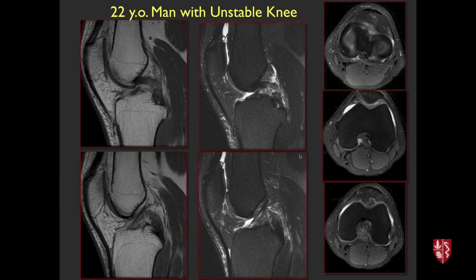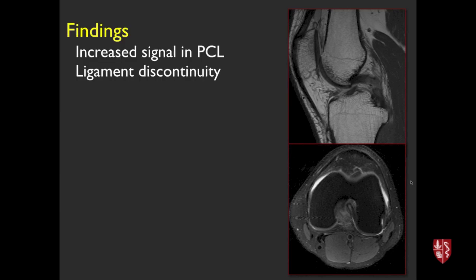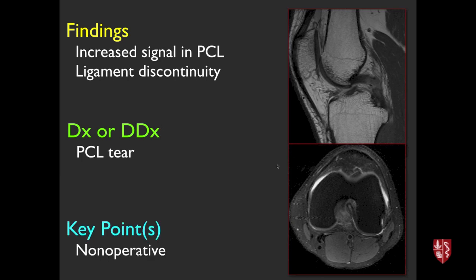22-year-old with unstable knee. MRI shows increased signal within the posterior cruciate ligament with discontinuity on axial images — a PCL tear. Fairly straightforward. PCL tears are usually treated non-operatively. If there's also an ACL tear, surgeons typically reconstruct the ACL but not necessarily the PCL.